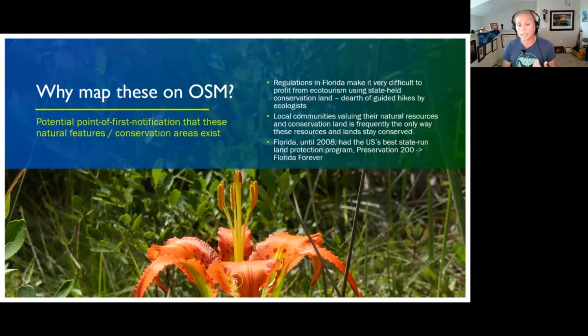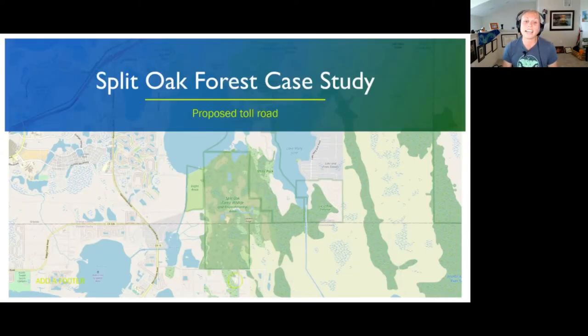So a case study that I participated in is the Split Oak Forest case study, where my master thesis is on Split Oak, and the Central Florida Expressway Authority proposed a toll road through it. So there was minimal public awareness of this wilderness park. Public officials assumed there would be minimal outcry and that public opposition could be easily overcome. So I started leading hikes, documenting natural communities, and I ran a mapping day to get all of the trails and trail markers mapped.